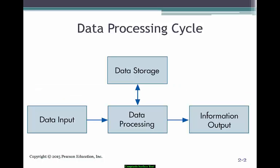Transaction processing is all about data processing. You have an input — possibly a source document or a transaction such as a payment invoice. Then you have to process that information, store it, and create an information output, which is usually financial statements or supporting evidence for the journal entry.